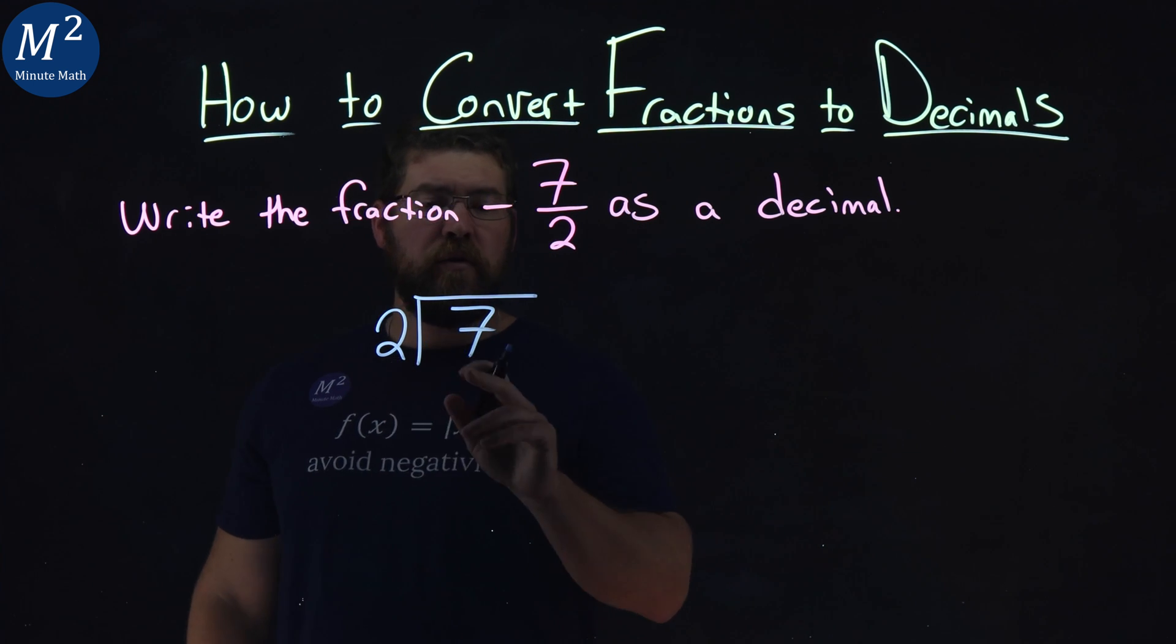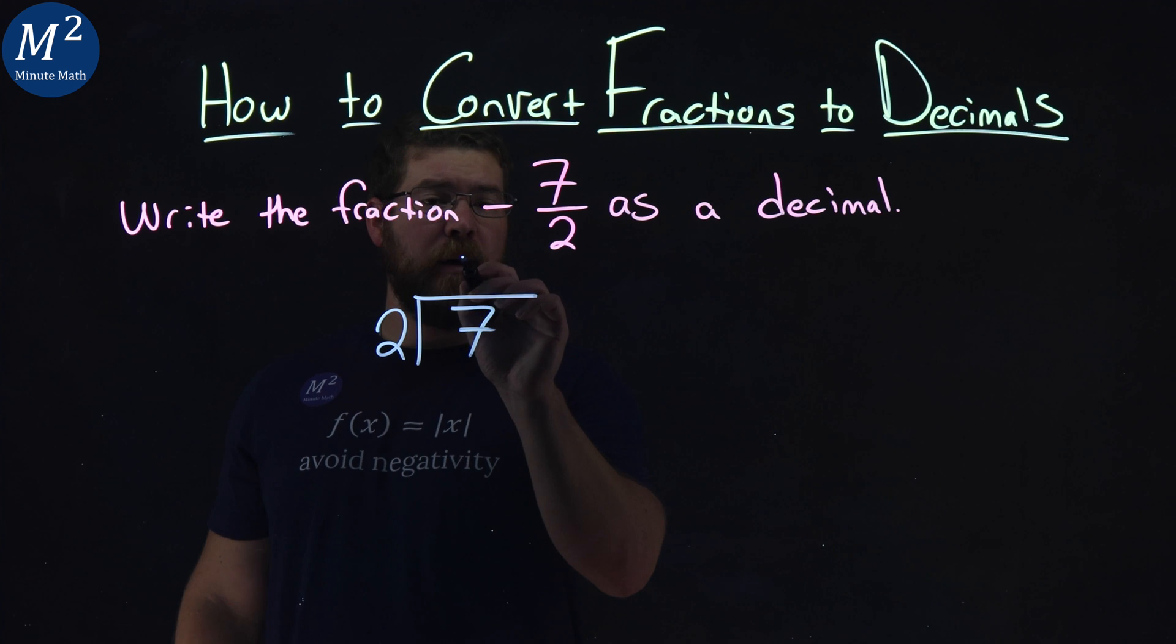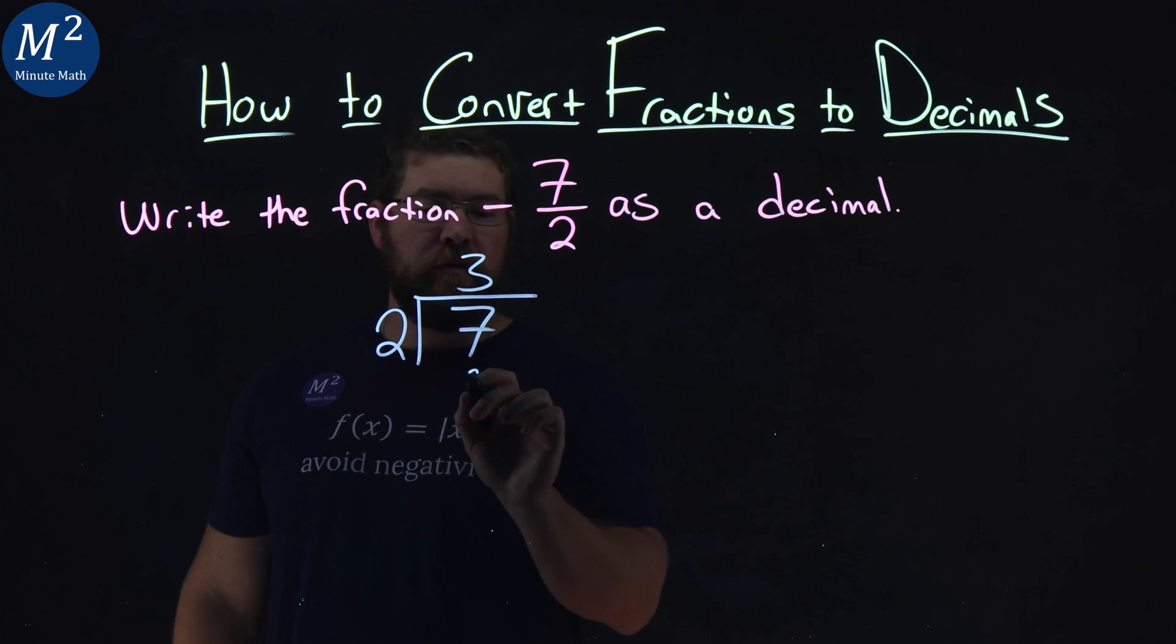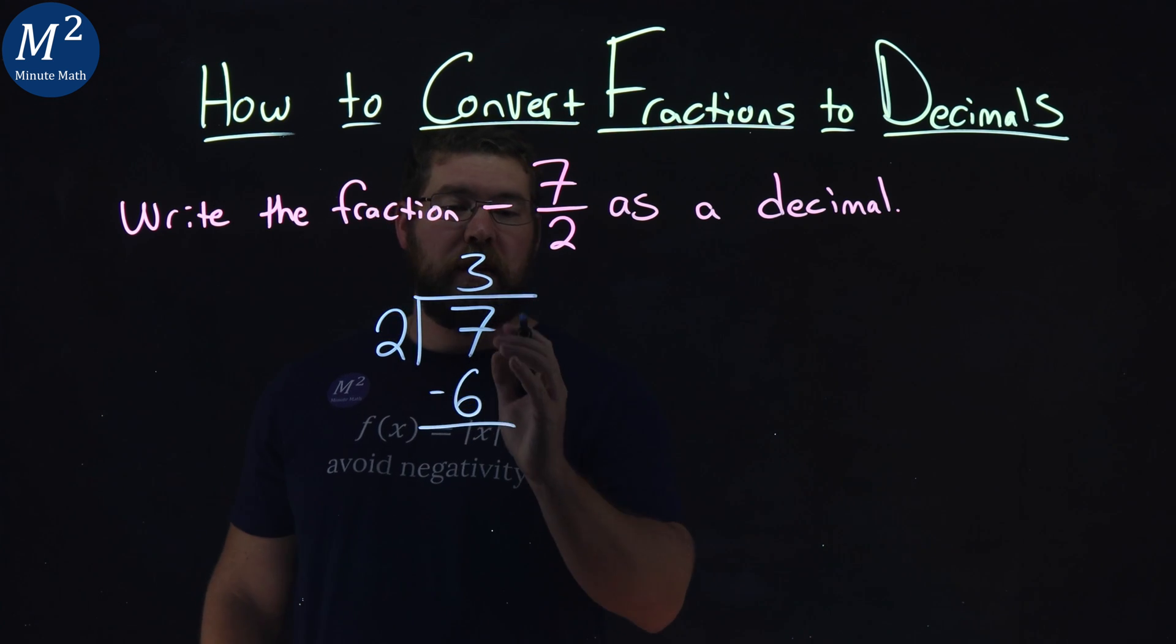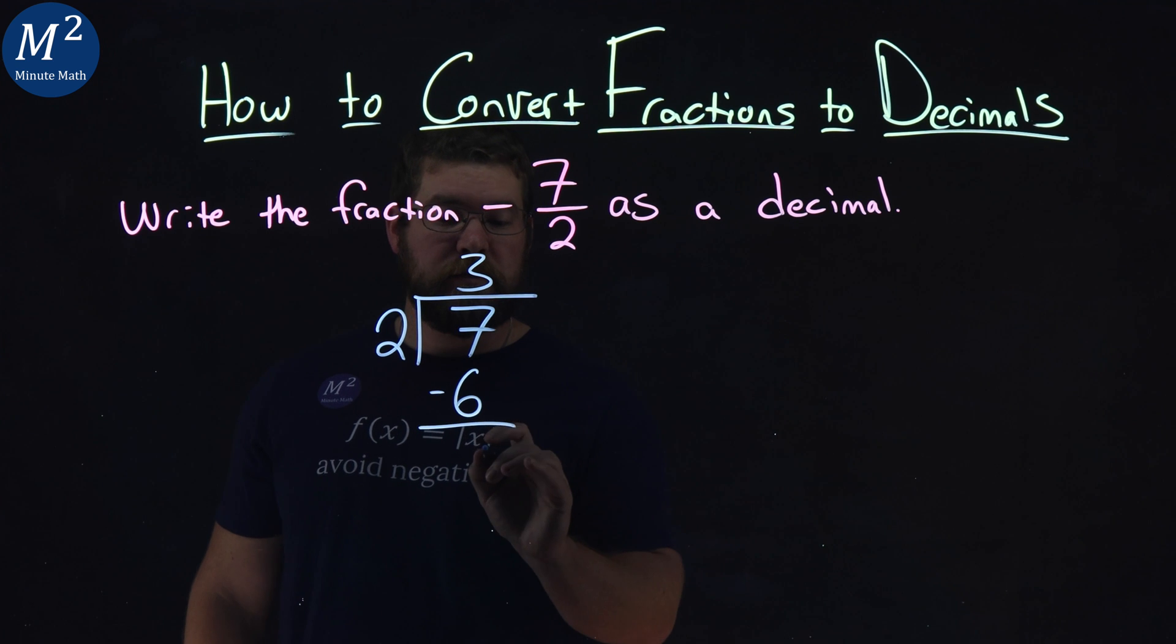Alright, long division. Does 2 go into 7? Well, it can three times, because 3 times 2 is 6. And we subtract the two numbers. 7 minus 6 is 1.